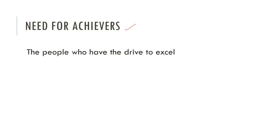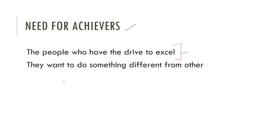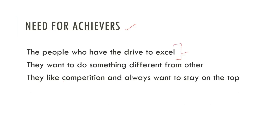Starting with need for achievement — what kind of people are those who have a need for achievement? First, these people have a drive to excel. They have inner energy; they want to do something and always want to stay in the limelight. They want to do something different from others and don't want to be part of the rat race. They like competition — they want to compete and stay on top, and they always want to succeed in that competition.